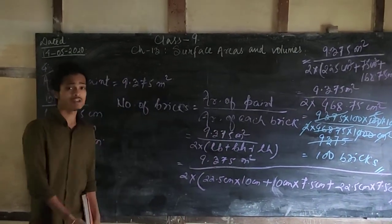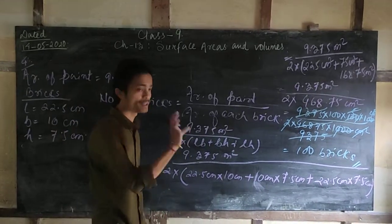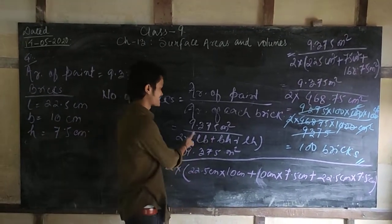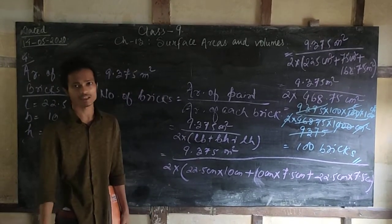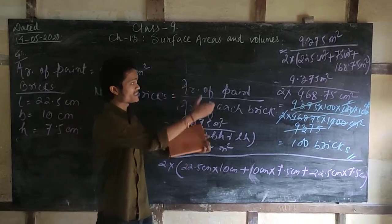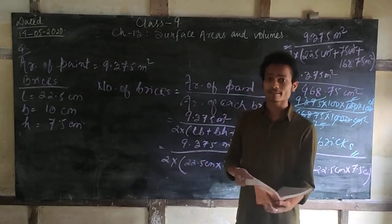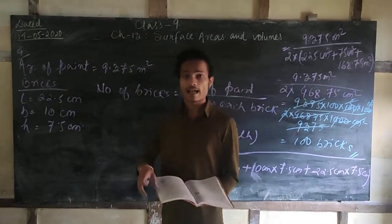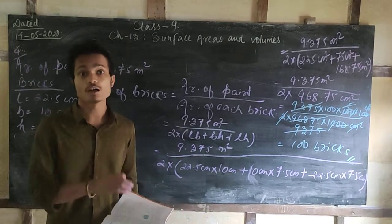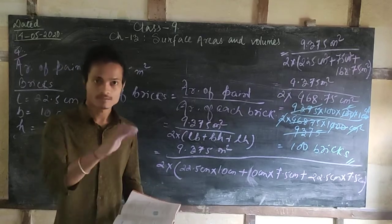We get 100 bricks. This is how we find the answer. Number of bricks equals area of paint divided by area of each brick. The brick has no open side, so we use the all-six-sides formula: 2 into (LB + BH + LH). Putting in the values, changing the units, we get the answer: 100 bricks. To better understand and move to the next topic, let us study question number 5.